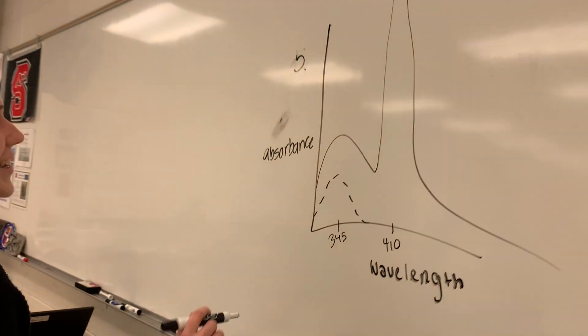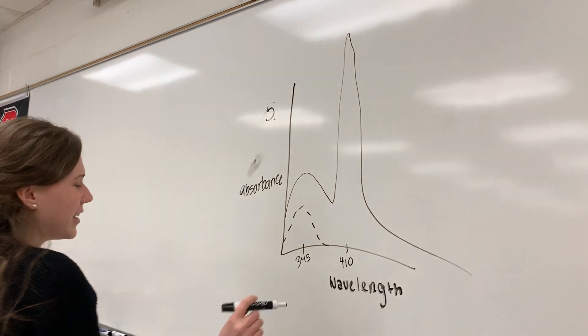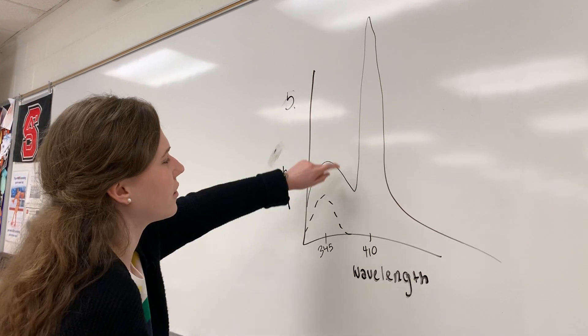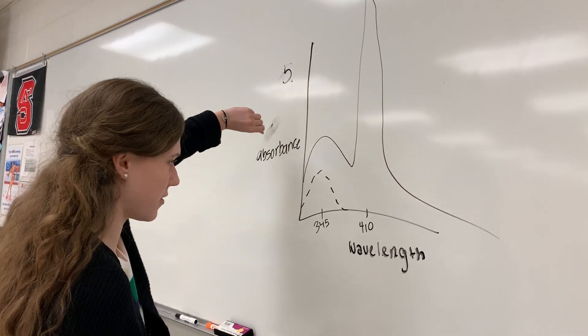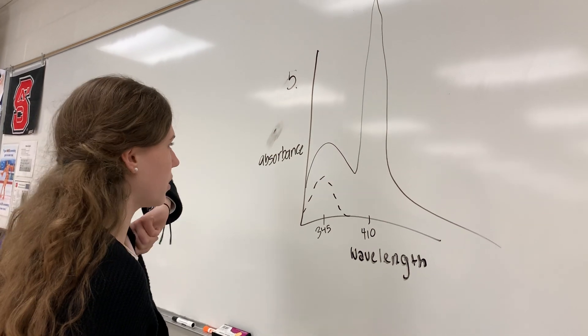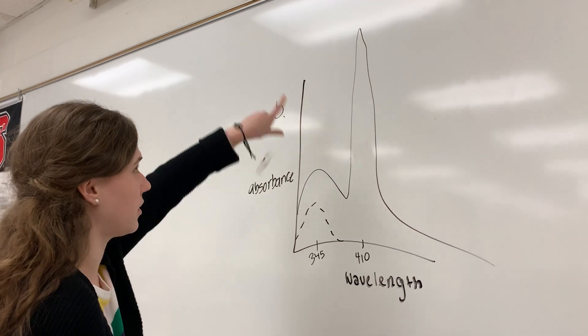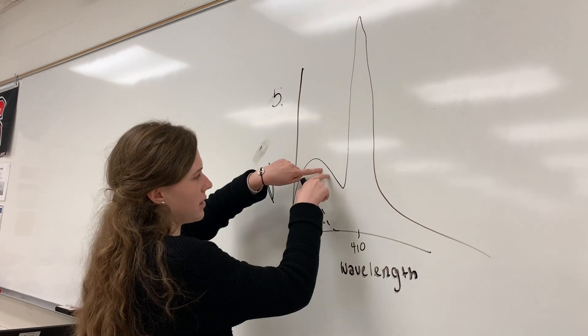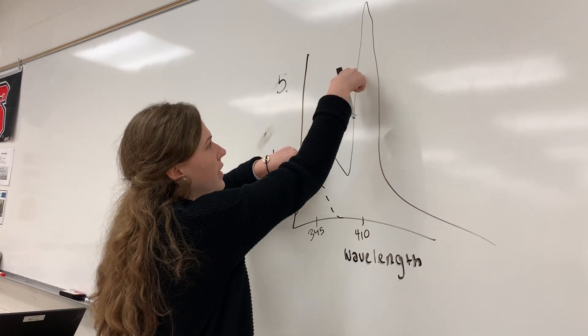Okay, so this is number five and we are determining the wavelength to make the violet the most sensitive. So if we look at our graph, we know it's going to be 410 because this solid line is violet.